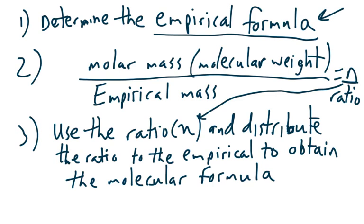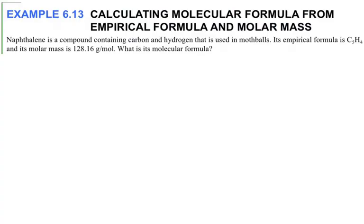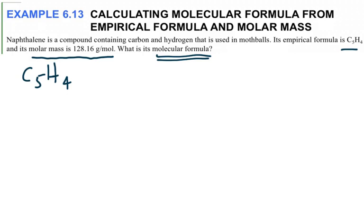Now I have two sample problems for you. In the first one, we're going to do the easier one where step number one is already done for you. Naphthalene is a compound containing carbon and hydrogen used in mothballs, and they already give you the empirical formula. So step one is done. We're going straight to step number two to find the ratio. Notice they give you the molar mass and they're asking you for the molecular formula.